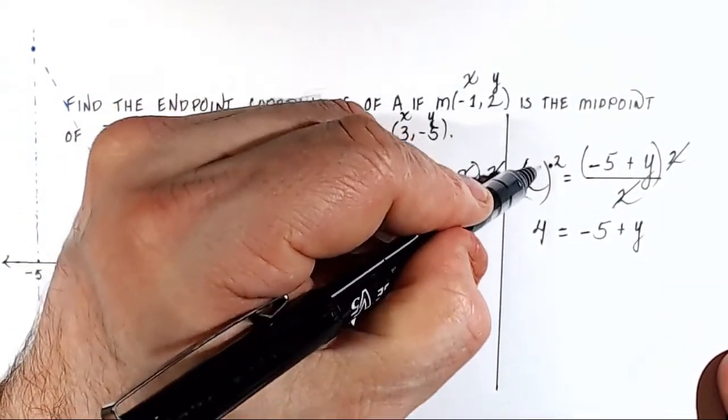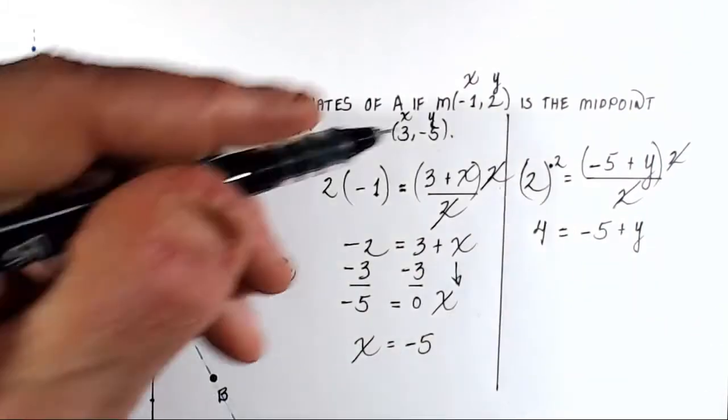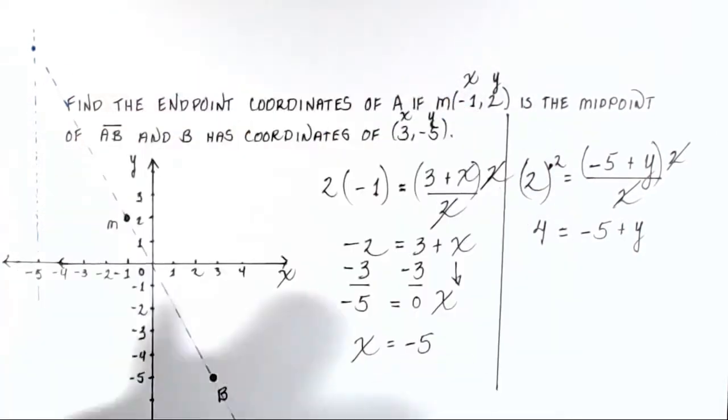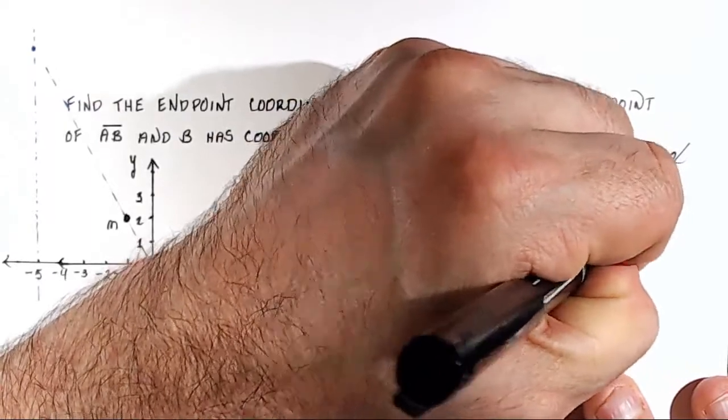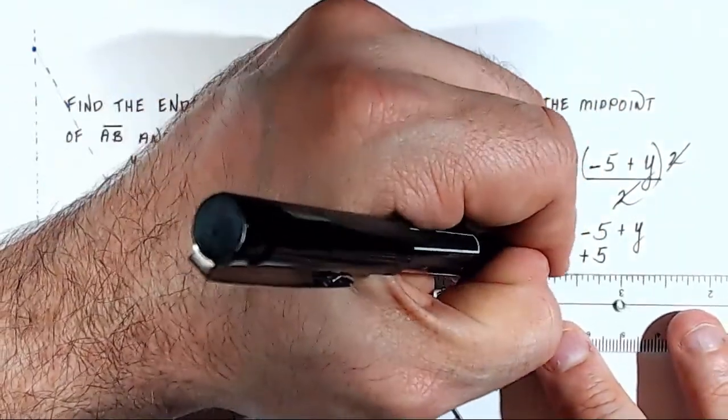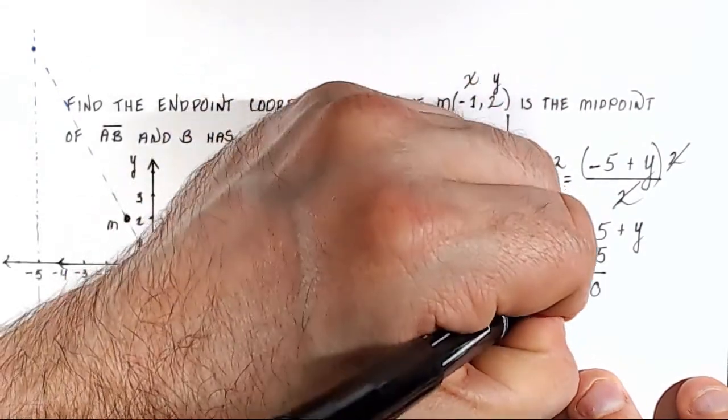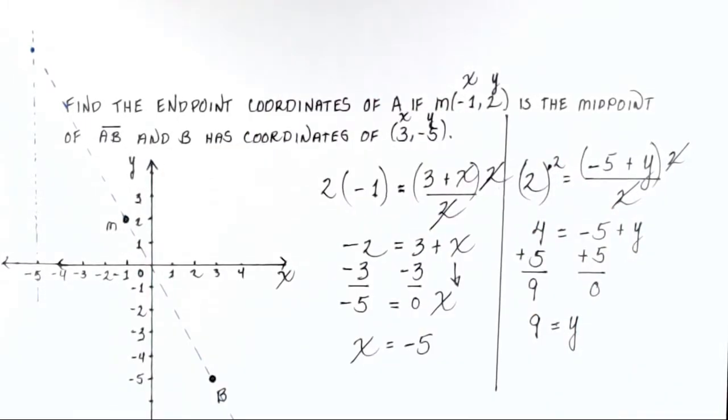I want to pause here and make sure you know I'm putting these parentheses here so I know that I'm multiplying. The parentheses indicate that I'm multiplying. Now I'm down to the final step. I have -5 + y equals 4. So I want to add 5 to both sides to get the variable by itself. On the right side, -5 + 5 is 0. And 4 + 5 is 9. So 9 equals y. So the y-coordinate of the endpoint is 9.